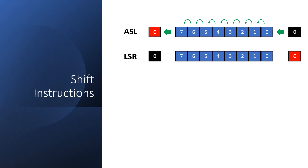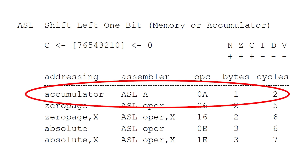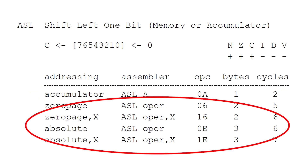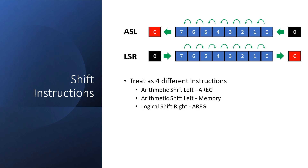Logical shift right is basically the opposite. We move bit 0 into carry, bit 1 into bit 0, bit 2 into bit 1, and we do this all the way up to bit 7 which goes into bit 6. Then we backfill bit 7 with a 0. In the 6502 these operations can be done on the accumulator or on a value stored in memory. I'm going to treat them as four different instructions: ASL on AREG, ASL on a memory location, LSR on AREG, and LSR on a memory location.